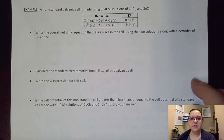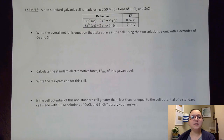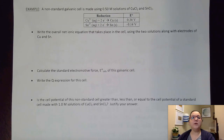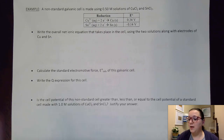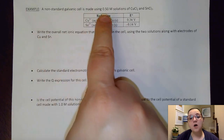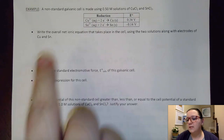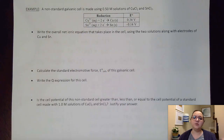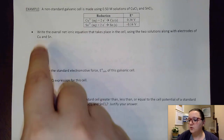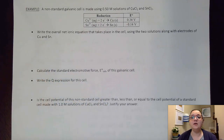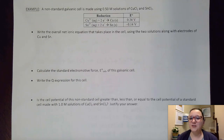Let's look at one last example. We have a non-standard galvanic cell made using 0.5 molar solutions of copper(II) chloride and tin(II) chloride. It's non-standard because concentrations are 0.5 molar instead of 1 molar, but it's still a galvanic cell so it should still be spontaneous. Pause the video and try the first three bullet points.